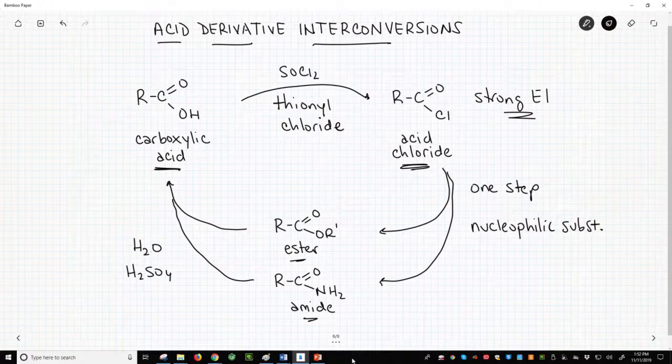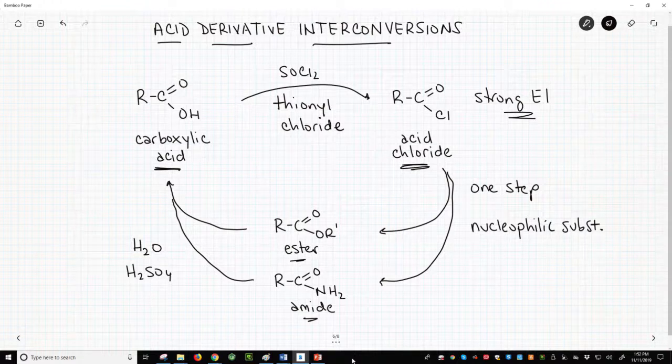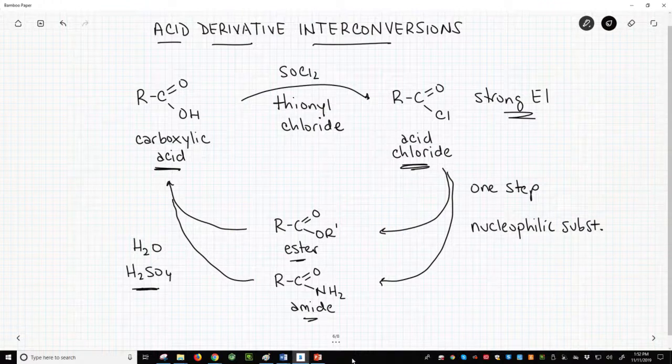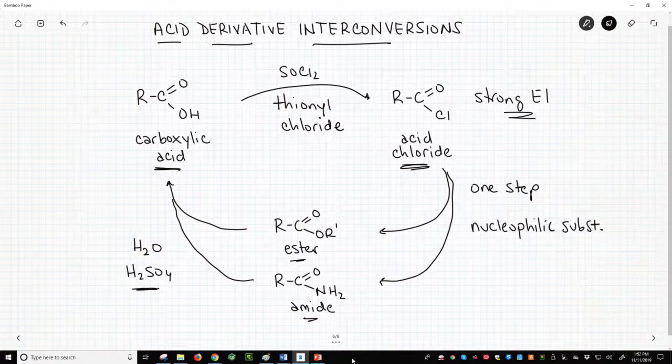Great! We've made new acid derivatives, but how do we complete the circle and get back to the original carboxylic acid? As it turns out, all acid derivatives can be treated with acid and water and converted into the parent carboxylic acid. This is a hydrolysis reaction.